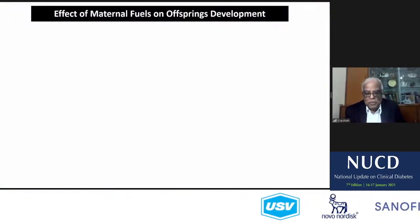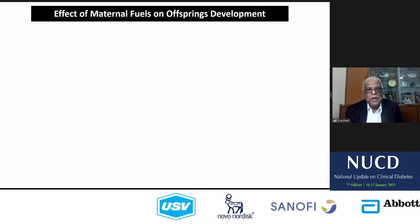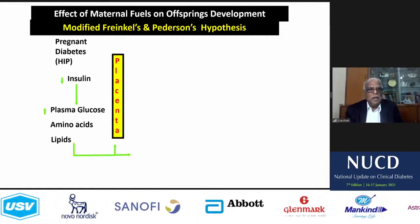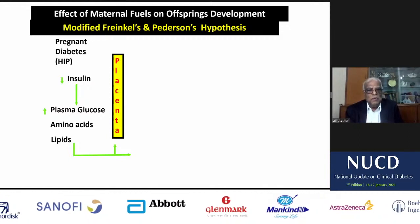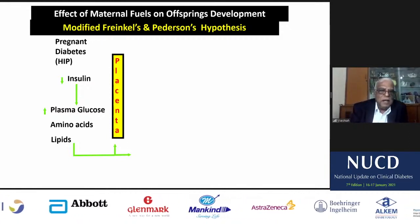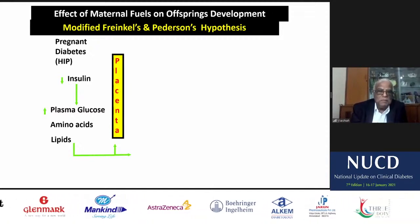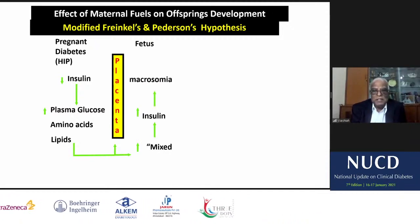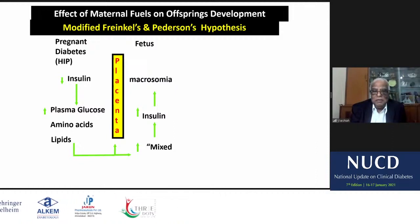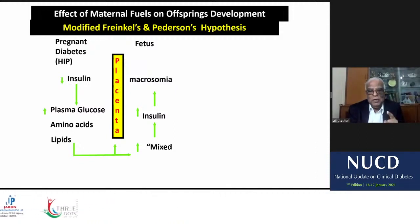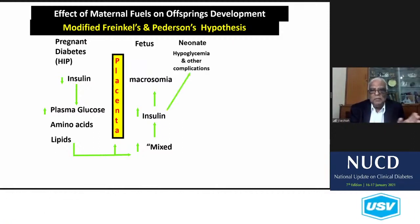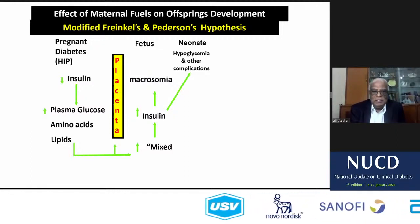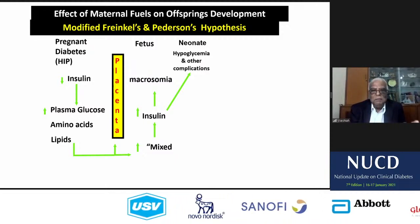Summing up — the effect of maternal fuels on offspring development. Modified Frenkels' hypothesis: in pregnant diabetes, that is hyperglycemia, insulin level is low, so it increases plasma glucose. Mixed nutrients cross the placenta, and these mixed nutrients stimulate insulin in fetal beta cells. There is hyperinsulinemia in the fetus, and the combination of mixed nutrients and fetal hyperinsulinemia will produce macrosomia.